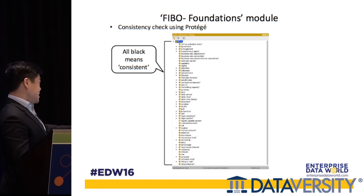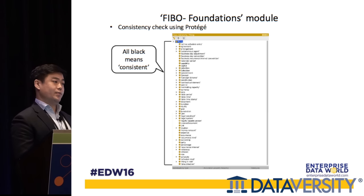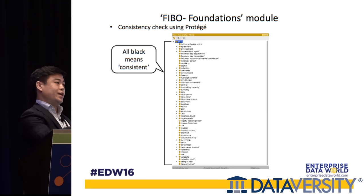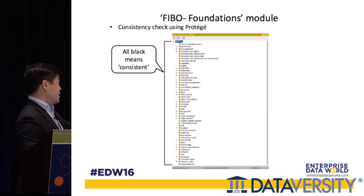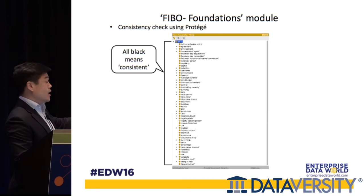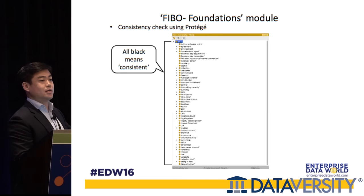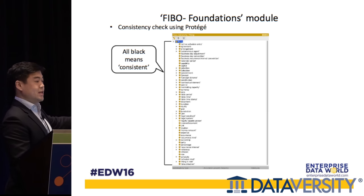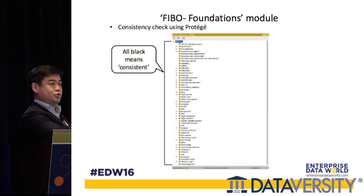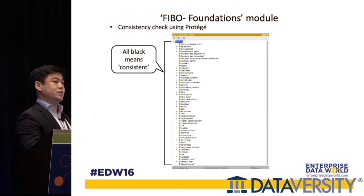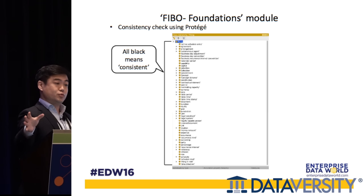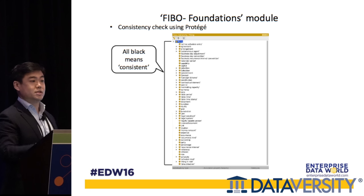The consistency check is done using Protégé, a tool that many ontology engineers use to work on ontology files. When you bring in an RDF ontology file, it displays the data elements of that document. If the file is consistent, all data elements will be displayed in black; if inconsistent, you'll see red elements. As you can see, everything is black. The file used is called FIBO Foundations 1.0 — the master file for the FIBO Foundations module that imports all sub-modular groups within it.